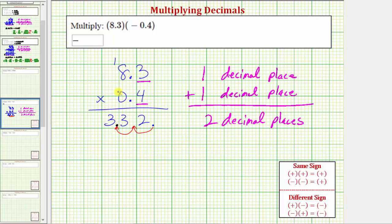So we now know that 8.3 times 0.4 equals 3.32. But because we have positive 8.3 times negative 0.4, our product is really negative 3.32. I hope you found this helpful.